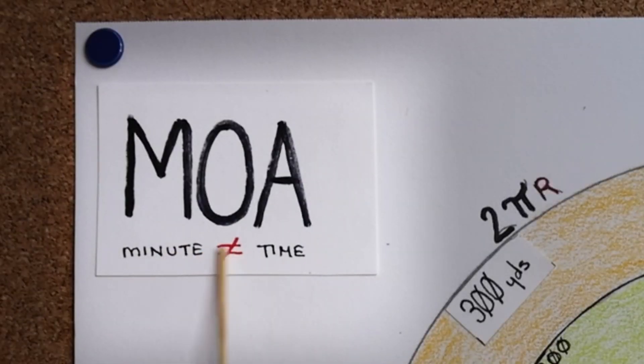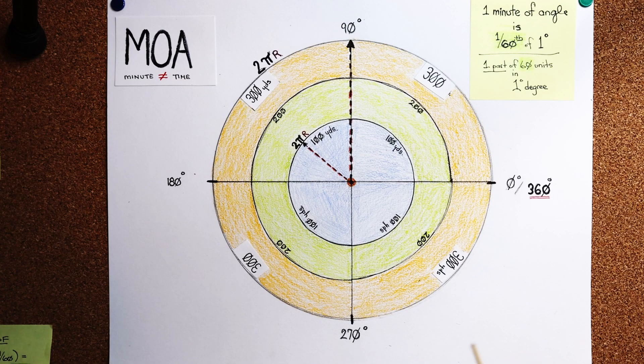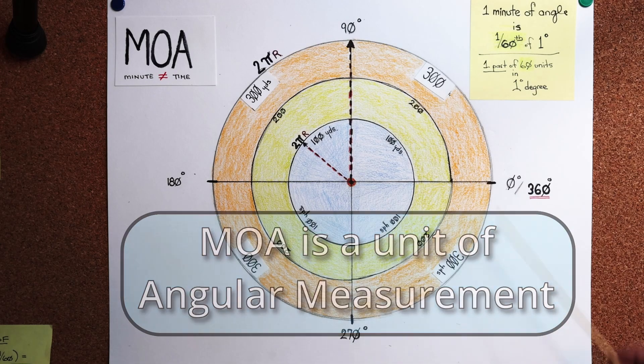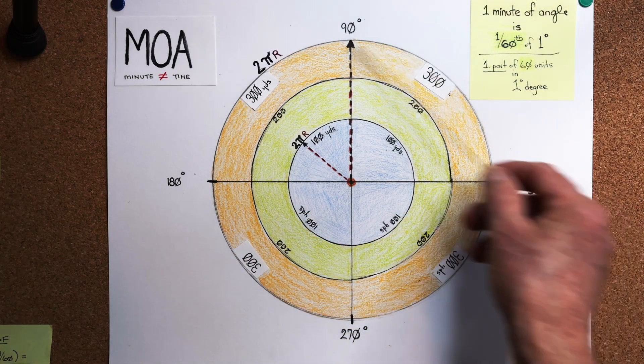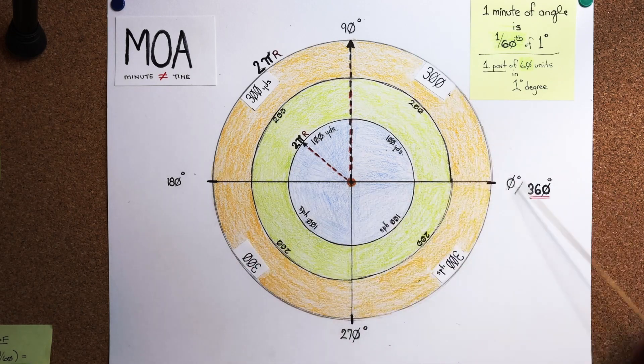First thing is the minute in the definition of minute of angle has no relation to time. When we talk about minute of angle, minute of angle is a unit of angular measure, therefore we have to use degrees. When we use degrees, we use a circle of 360 degrees, zero all the way around to 360.